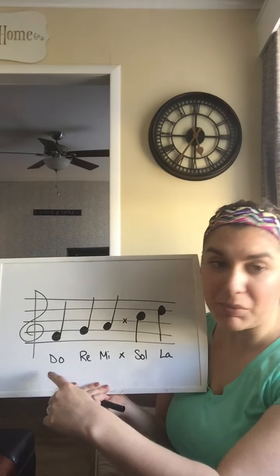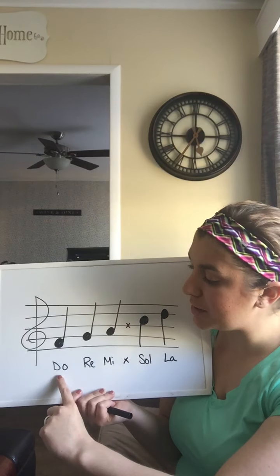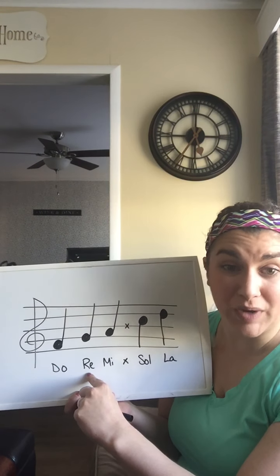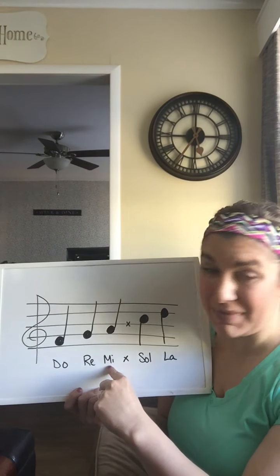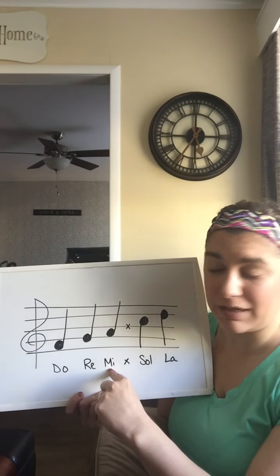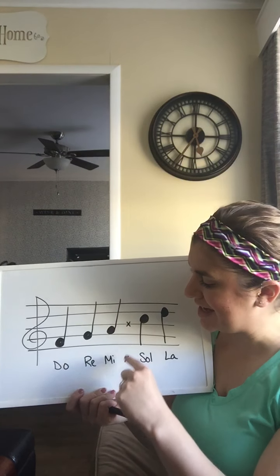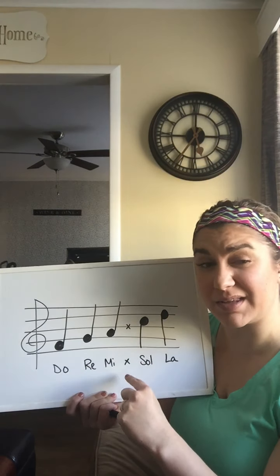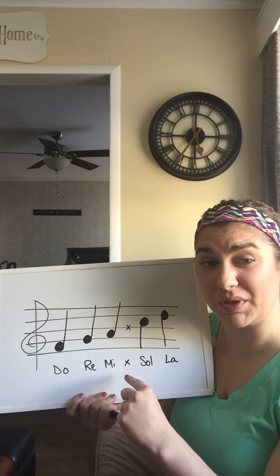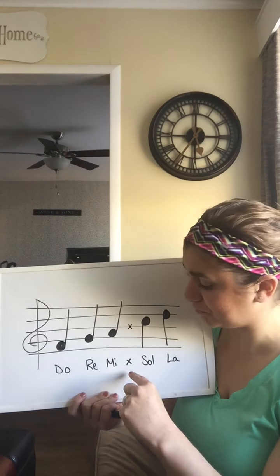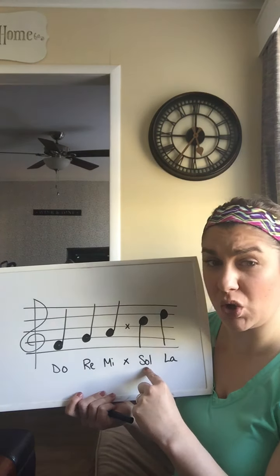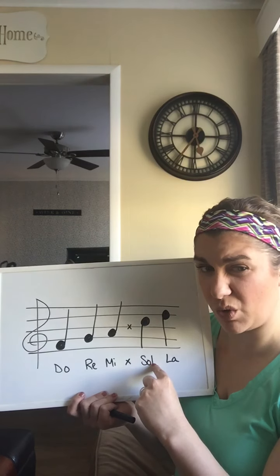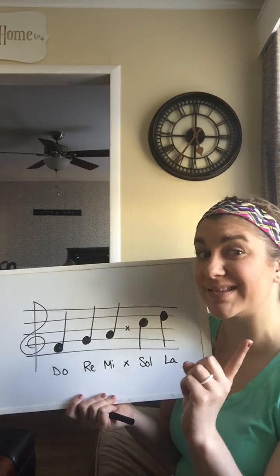So I've labeled them here. Do is at the bottom. Re is a neighbor — Re comes next. Mi is the next neighbor. I have an X here and also on my music staff because I'm going to skip this next one — we learn about them in third and fourth grade. So I'm going to go over to Sol. I've skipped over this person and went to Sol.